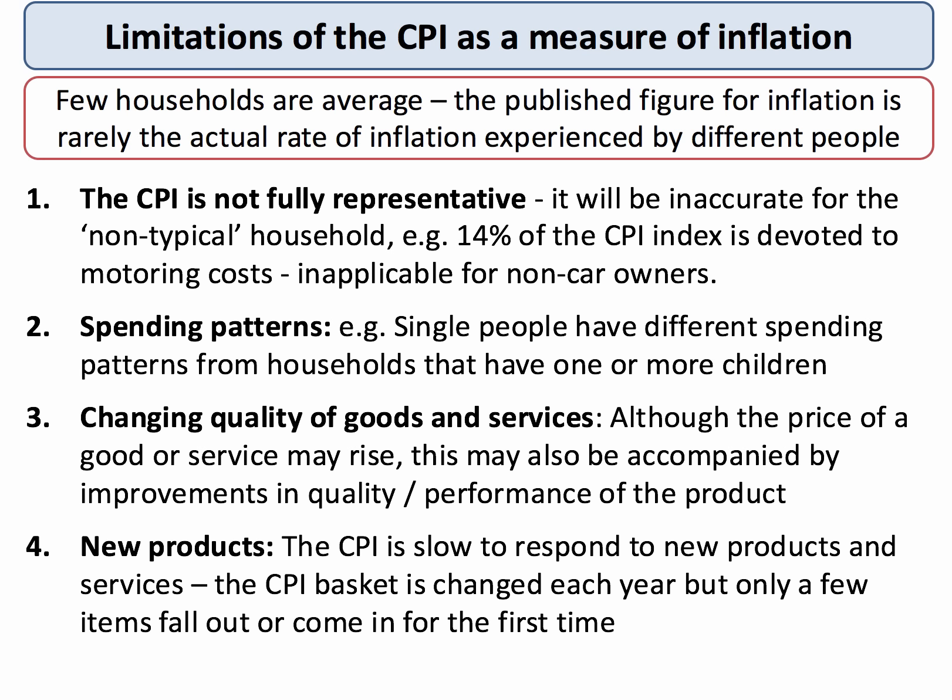It's also important to think about the changing quality of goods and services. The CPI tells us about the price of a good or service, but it may hide important qualitative changes in the range, quality and performance of a product. For example, your smartphone subscription might go down a little — that might be deflation — or it might go up a little, which is inflation. But what about what your smartphone can do in terms of consumer services, consumer surplus, and the utility you get from using the product?